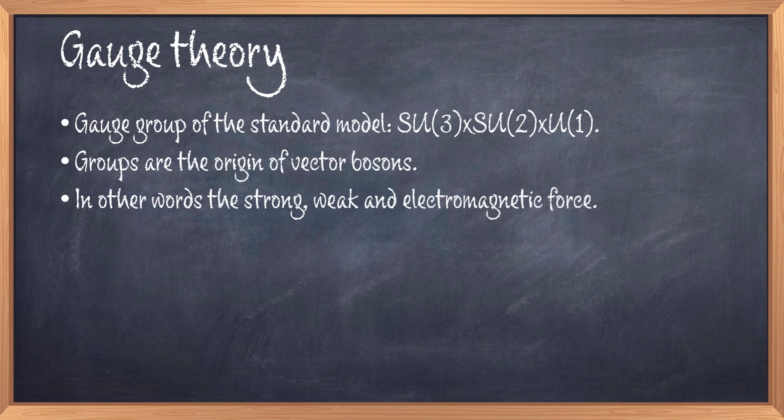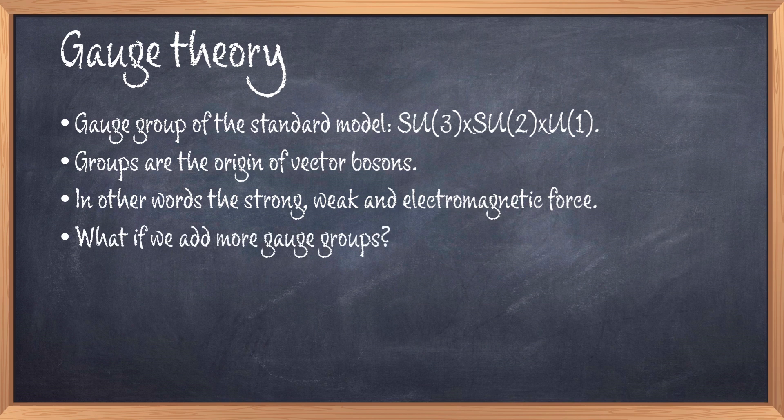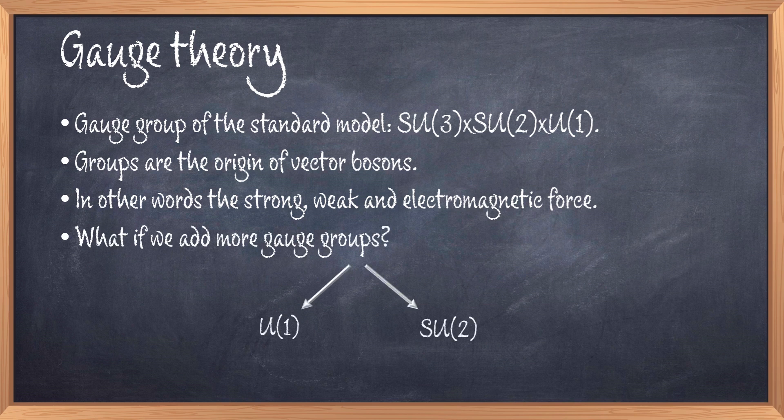Now we also have particles that arise due to different math, but what if we add more symmetry groups to the standard model? That is what I looked at and indeed you can make a model which contains a dark matter candidate like this. So that was some background information and theory about how we construct models in physics.